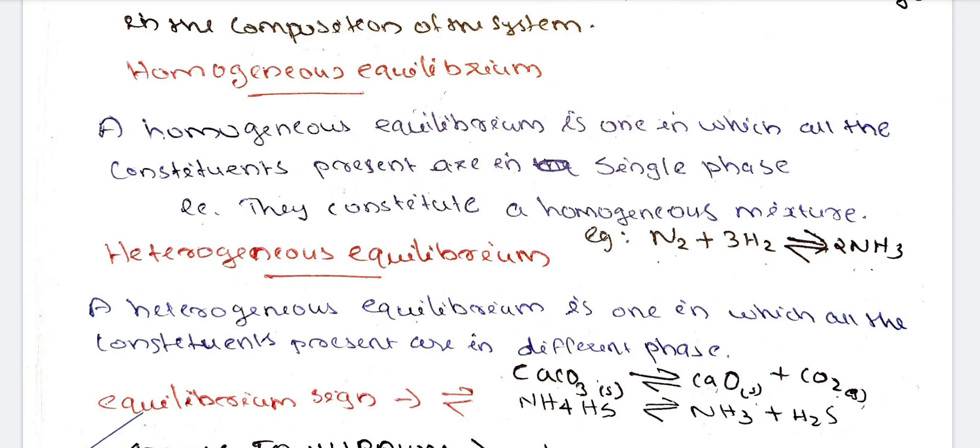You have a heterogeneous equilibrium. It is opposite. So a heterogeneous equilibrium is one in which all the constituents present are in different phase. That is why the reactants and products are in different phases. One is solid, liquid, and one is solid. That is why we are talking about heterogeneous equilibrium.